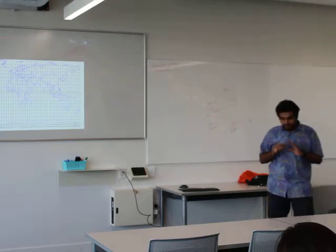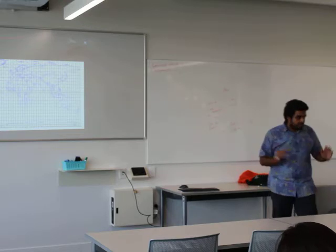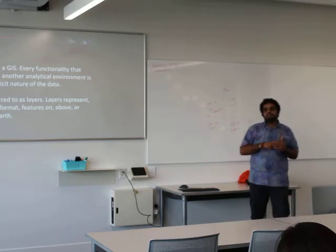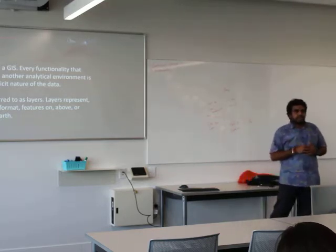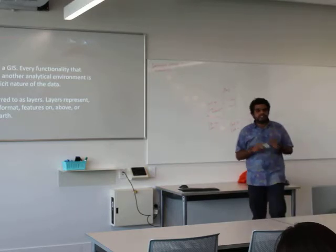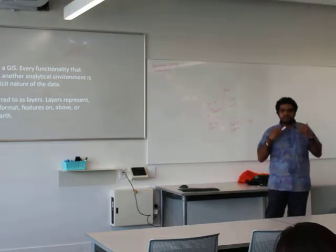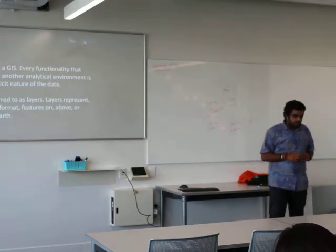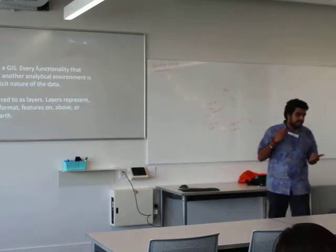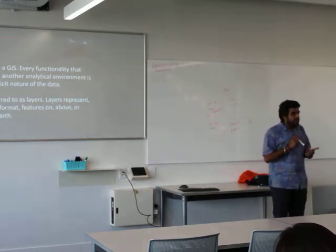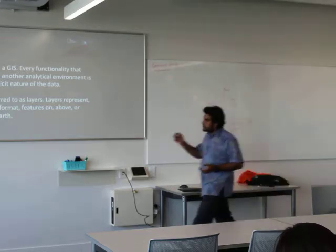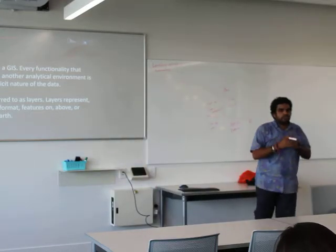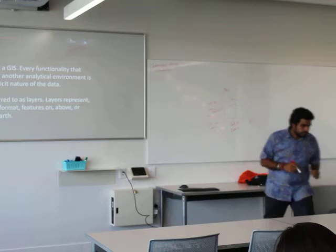Going back — once we understand how to project our globe onto a flat surface, we move into data types. Like any information system, GIS is nothing without data. You can build awesome models and amazing things, but if you don't have good data and don't know how to collect or visualize it, the whole system falls apart. Spatial data is often referred to as layers, and what makes spatial data unique is that it's spatially explicit in nature — the data itself is useless if it's not tied to a particular location.